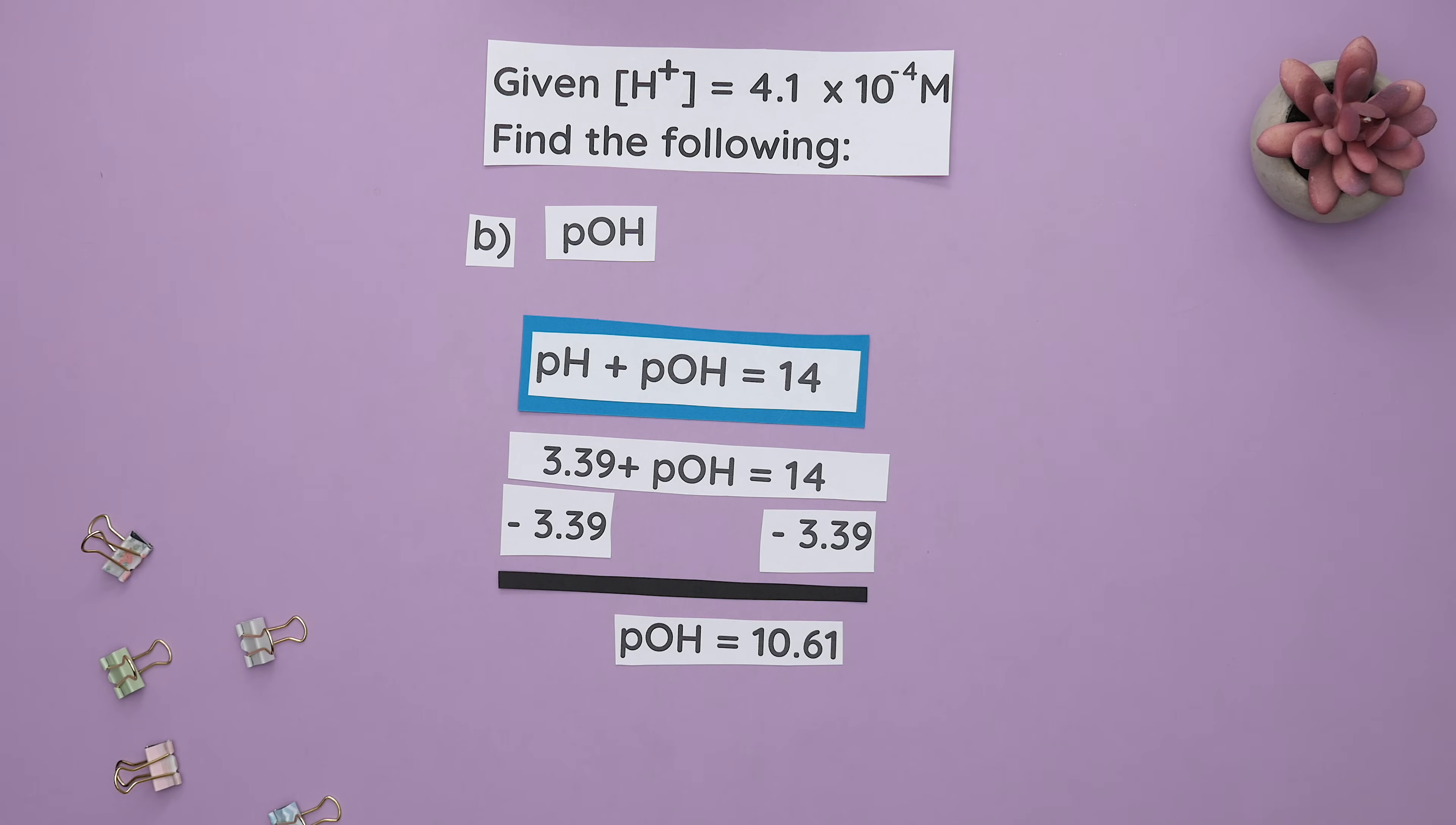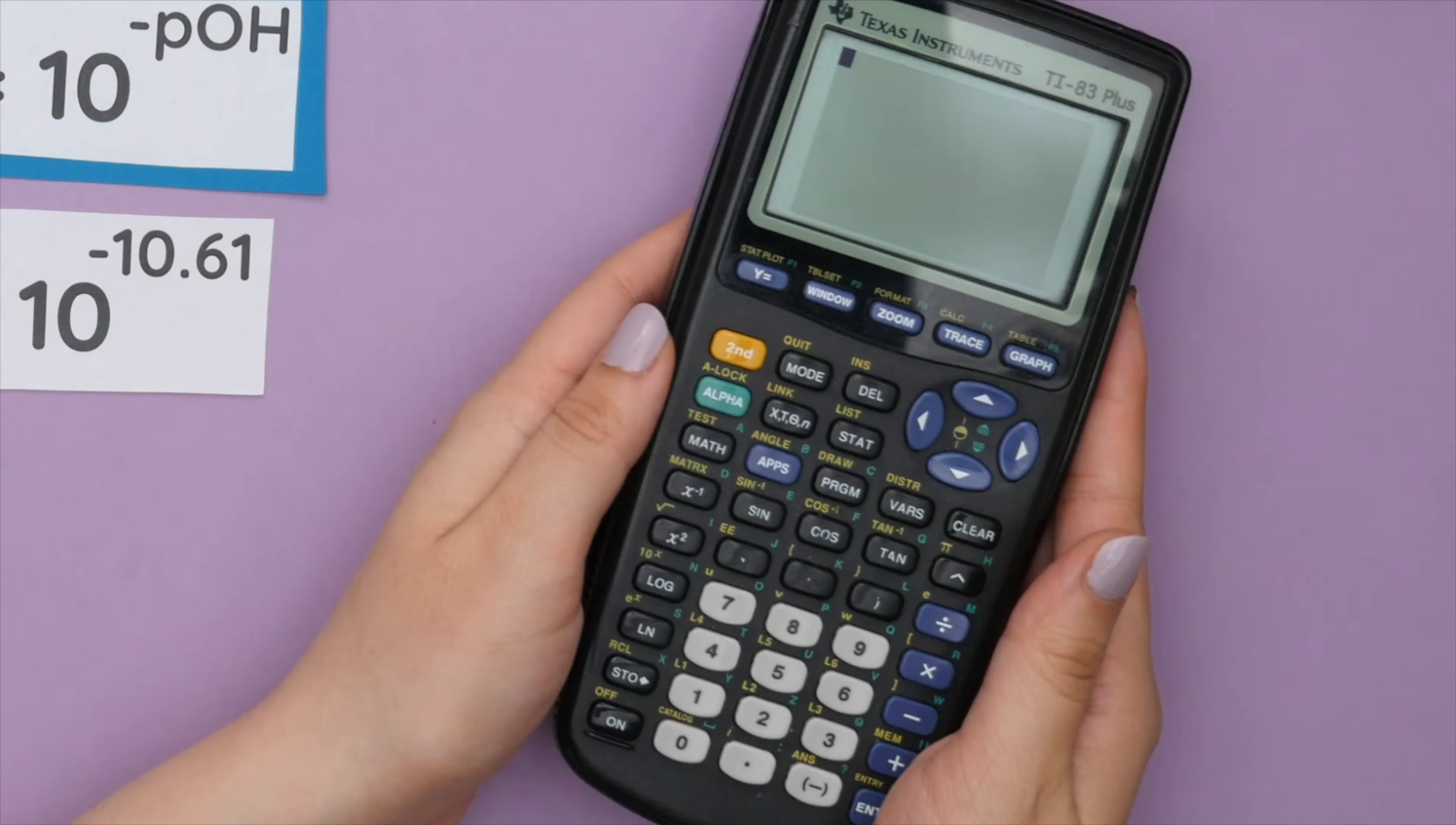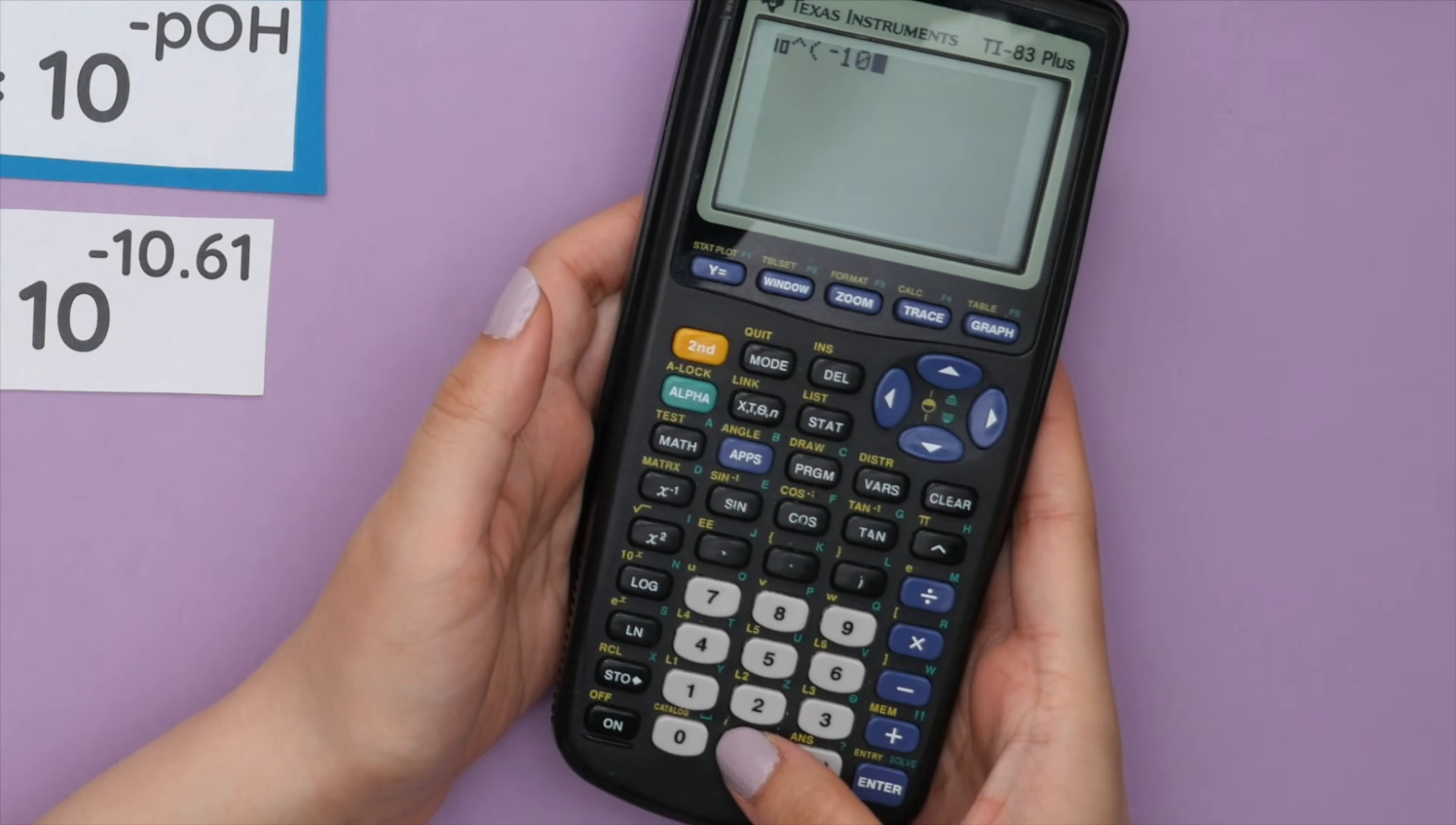Since we just found pOH and we are now finding the concentration of base, we can use this formula and plug in the pOH. Plugging this into your calculator, make sure to press second log and then put the exponent of negative 10.61.